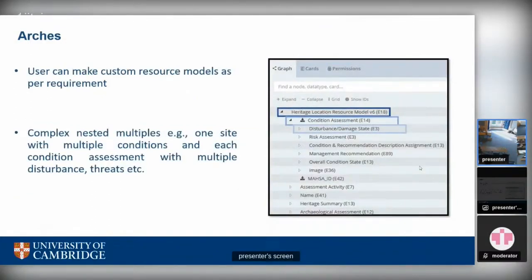Because resource models are totally customizable, Arches does allow you to go into a number of nesting levels. As you increase nesting levels, the data structure gets more complicated and it becomes harder to push data into Arches. There are genuine use cases requiring complex structure — for example, one heritage site can have multiple condition assessments done at different points in time, and each condition assessment can have more than one disturbance, risk, or threat associated with it. Going to deeper levels of nesting makes data import quite difficult, and this was a major challenge we faced when we started the project towards the end of 2020.